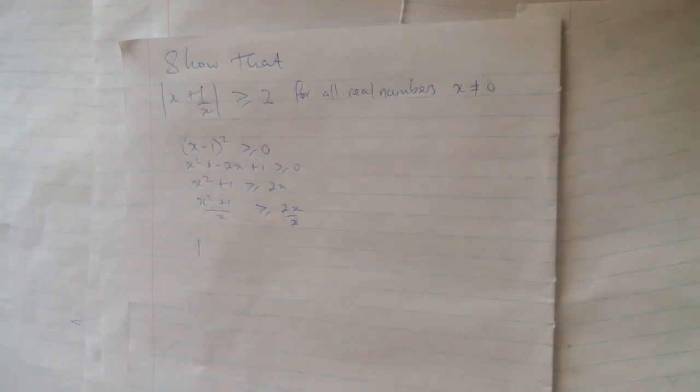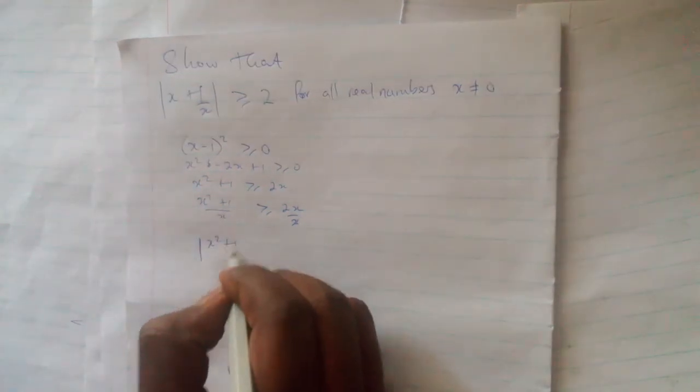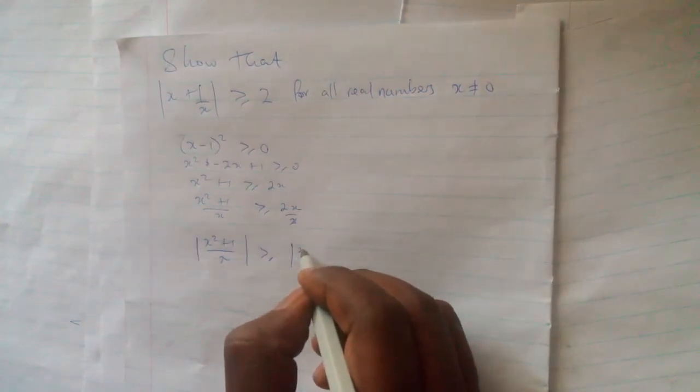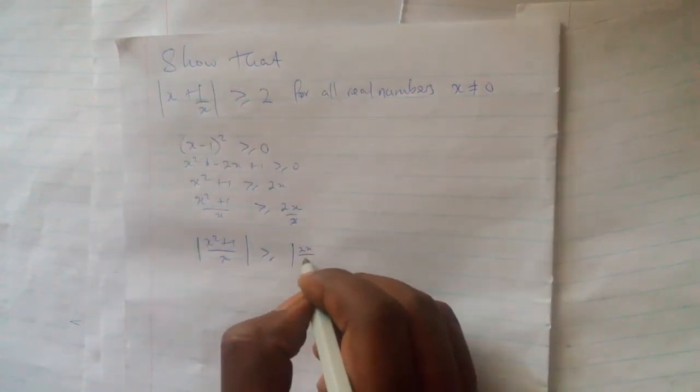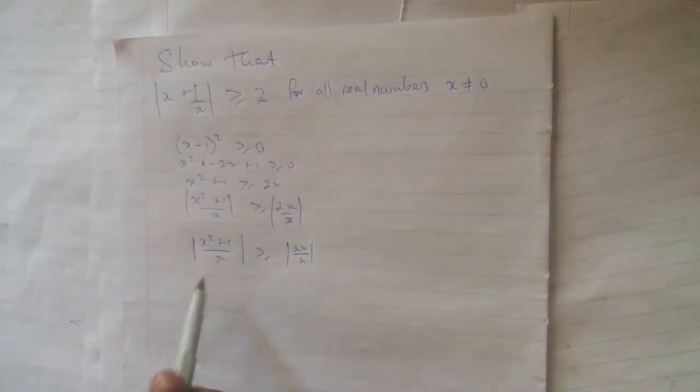But here, since we do not know if our x is positive or negative — and if it is negative, we would have to reverse the inequality sign — to take care of this situation we can place modulus signs on both sides, so that the inequality sign will not have to change. So we take the modulus of x squared plus 1 over x, which is greater than or equal to the modulus of 2x over x.